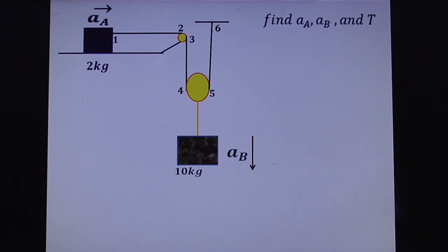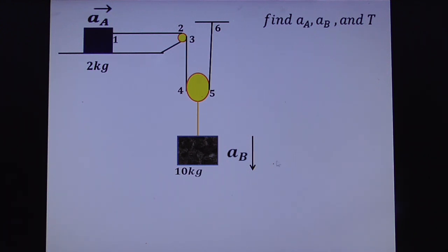The 10 kg block and the 2 kg block — since the mass of the 10 kg block is greater, it will obviously move downwards. Let this be mass B and this be mass A. So the acceleration of B is downwards, and if B moves down, mass A will move in the opposite direction.